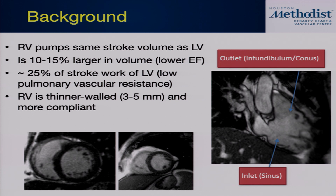The workload of the right ventricle is about 25% of the stroke workload of the left ventricle, because the RV is pumping against a low pressure system. Pulmonary artery pressures generally should not be anywhere near aortic pressures. As a result, there's less muscle and less myocardium. The RV wall is typically about 3 to 5 millimeters thick compared to the LV wall at 8 to 11 millimeters. The RV also tends to be much more compliant.